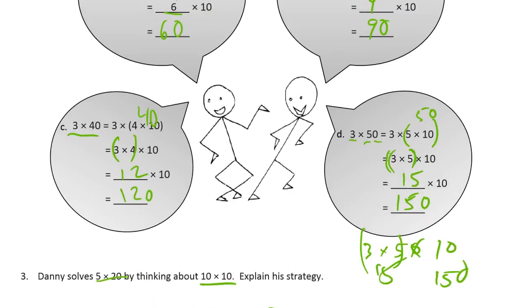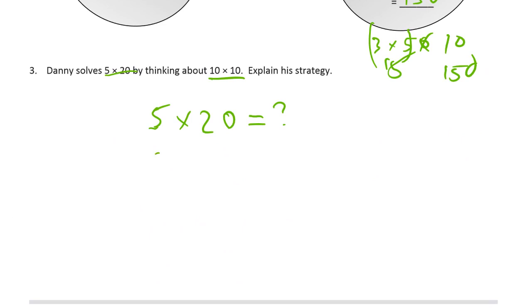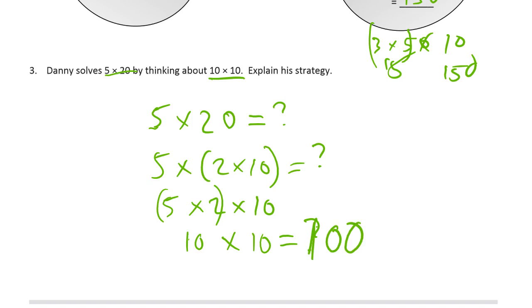That's two times ten. And what's five times two? That's ten. So we're looking at ten times ten. And we know what ten tens is. That's a hundred. And that explains the strategy. And that's a tremendous strategy. Thank you.